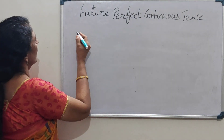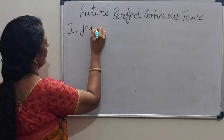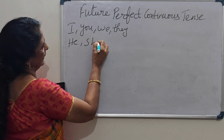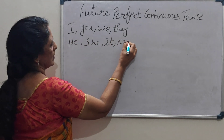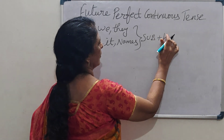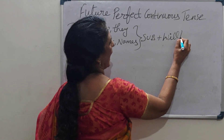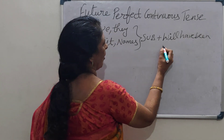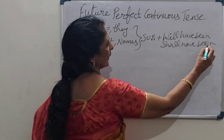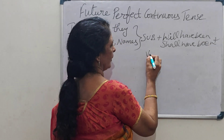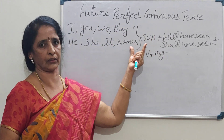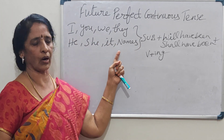For all subjects — I, you, we, they, he, she, it, or names — we have to write 'will have been' or 'shall have been' followed by verb plus ing. That is the Future Perfect Continuous Tense structure.